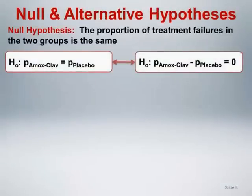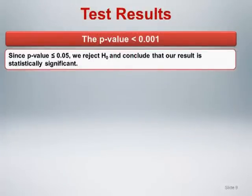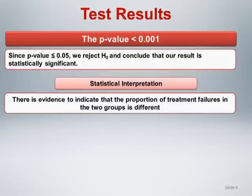We state the null hypothesis as follows: the proportion of treatment failures in the two groups is the same, or equivalently, the difference in proportions is zero. The alternative hypothesis is that the proportion of treatment failures in the two groups is different, or the difference in proportions is non-zero. Performing the test at the standard significance level of 0.05, the p-value from the chi-square test of homogeneity is less than 0.001. Since this is less than 0.05, we reject the null hypothesis and conclude there is evidence that the proportion of treatment failures in the two groups is different.